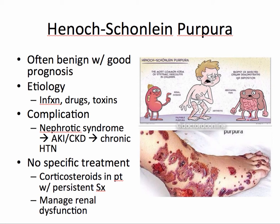Henoch-Schönlein purpura is a systemic vasculitis with IgA-dominant immune deposits that affect microvasculature. This often occurs in the skin, gut, and kidneys, as demonstrated by the image provided. This condition is often benign with a good prognosis, and is hypothesized to be associated with infection, drugs, and toxins. A potential complication is nephrotic syndrome, which can result in acute kidney injury or chronic kidney disease and chronic hypertension.